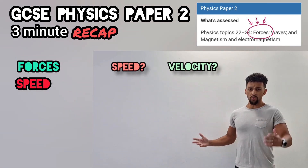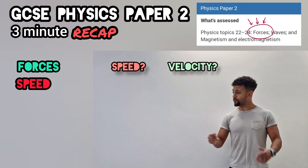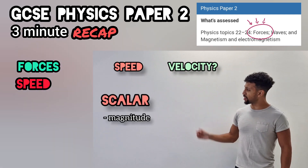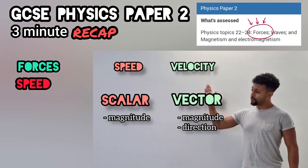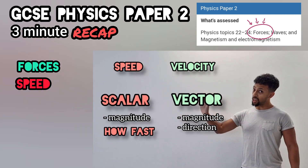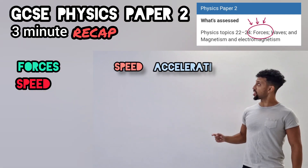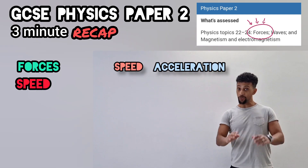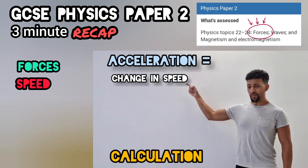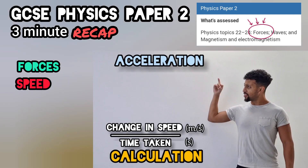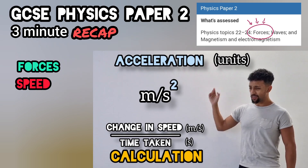Speed? Velocity? What's their description? They're not the same, I'll explain the difference. Speed's scalar, velocity's vector — speed's how fast without the direction. Done with speed, that's works acceleration. They're not the same as a calculation: speed change here, time below there — units like speed but this time it's squared.